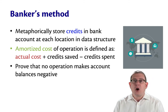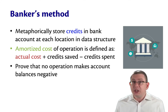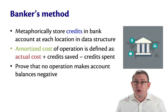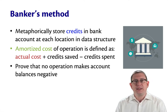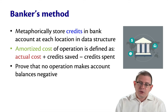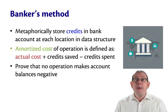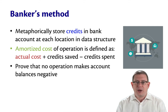You define the amortized cost of an operation to be the actual cost — what it really takes according to the code or the algorithm — plus the credits saved by that operation, minus the credits spent. Typically, you're going to either save or spend, not do both, although you can mix and match. So the actual cost is either going to go up if you're saving some additional credits, or down if you're spending some credits.